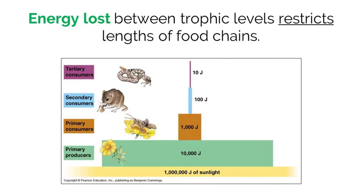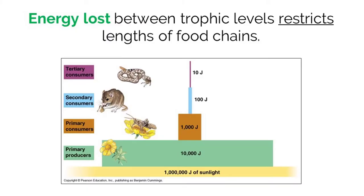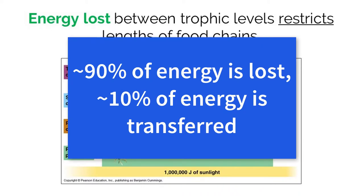As stated before, energy is lost as it is transferred to the next trophic level of an ecosystem. But how much energy is lost? The general rule is that about 90% of energy is lost from one trophic level to the next. Therefore, about 10% of usable energy is transferred.